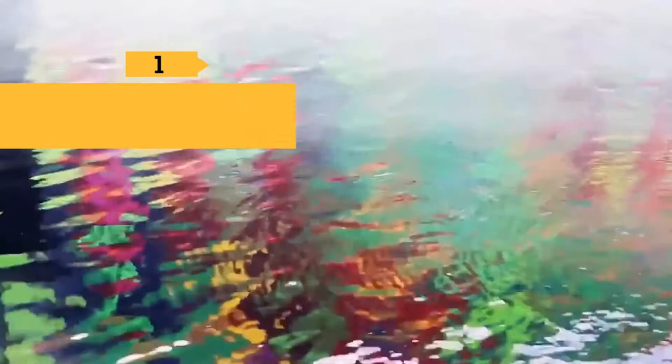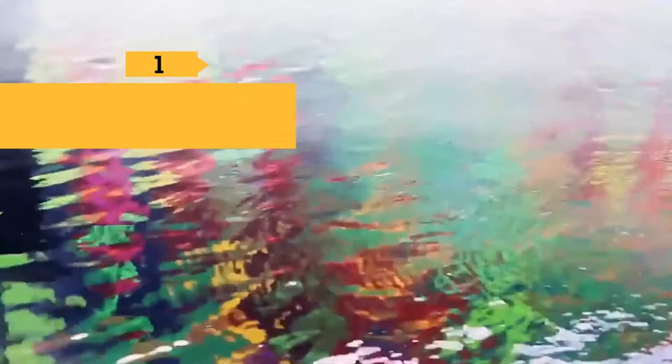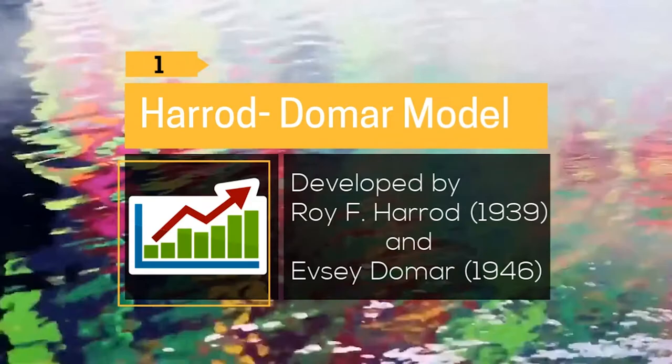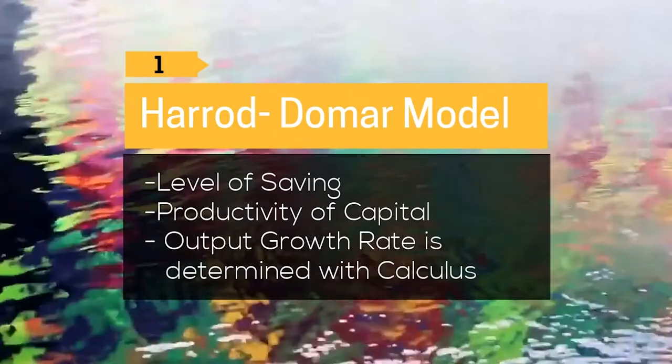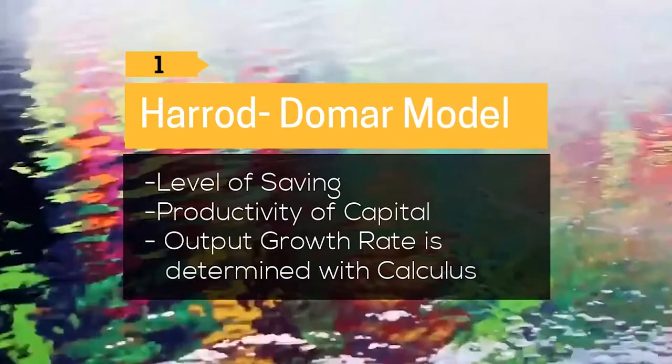The Harrod-Domar model was developed independently by Roy F. Harrod in 1939 and F. C. Domar in 1946. According to this model, an economy's growth rate is explained in terms of the level of saving and productivity of capital.